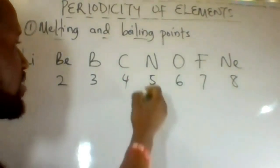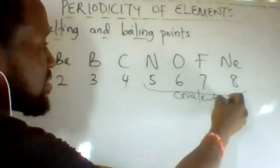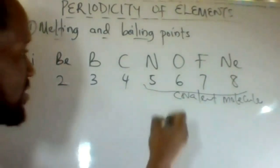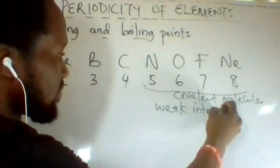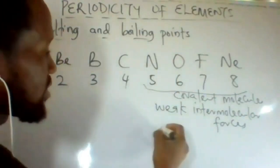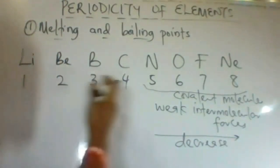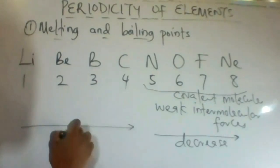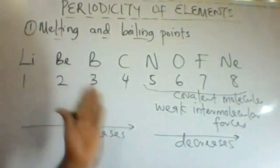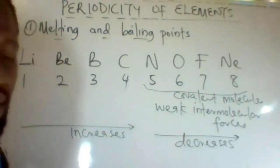Elements in groups 5, 6, 7, and 8 are simple covalent molecules. They are held by very weak intermolecular forces. Therefore, the melting and boiling points for these elements will decrease. As a general rule, melting points and boiling points for metals increase, while for non-metals they decrease from left to right across the period.